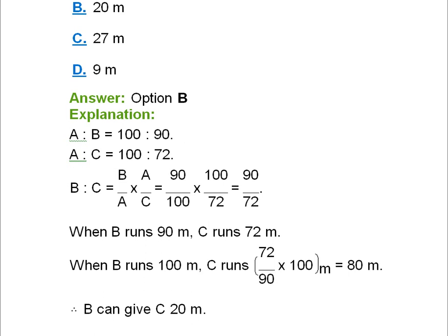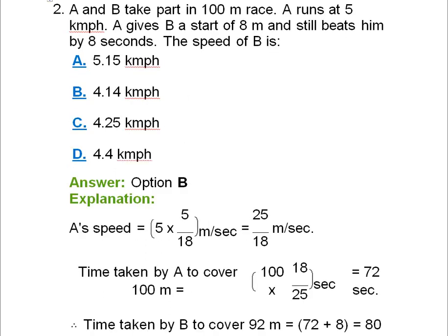Question 2: A and B take part in a 100-meter race. A runs at 5 kilometers per hour. A gives B a start of 8 meters and still beats him by 8 seconds. Calculate the speed of B. The speed of A is 5 km/h, but the time is in seconds and distance in meters, so we convert using the factor 5/18. After converting, A's speed is 25/18 meters per second.